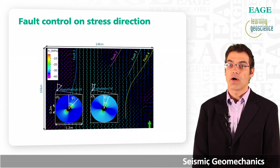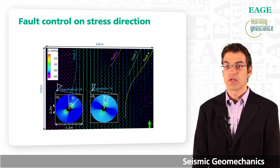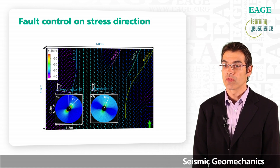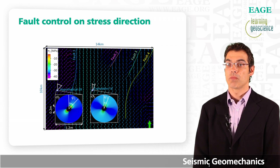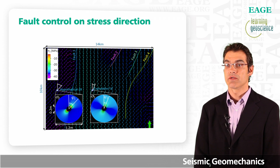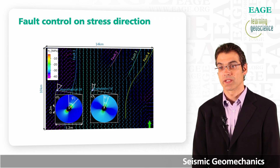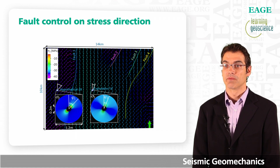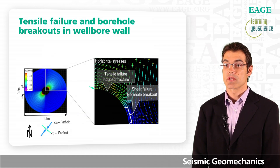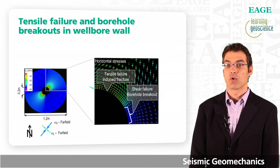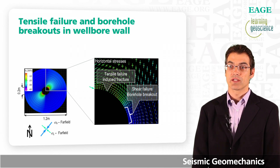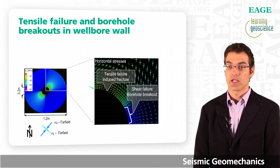Let us investigate how changes in stress direction across the fault would influence borehole image logs. Through the 3D geomechanical model, I dropped two vertical wellbore trajectories, simulated the excavation of rock during drilling, and recomputed the stress field in the near wellbore of these two wells. We can now understand from the 3D geomechanical model why tensile failure occurs in the direction of sigma H max in the far field, and why shear failure may occur at the wellbore wall in the direction of sigma H min.